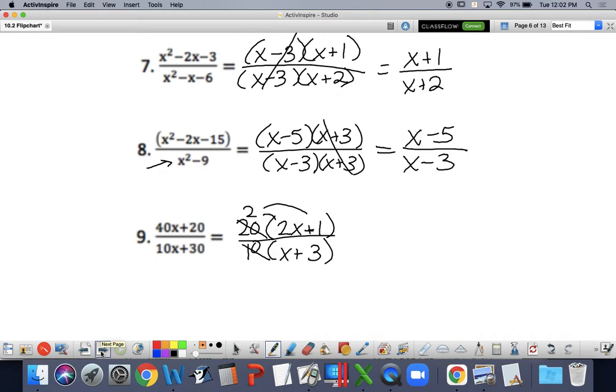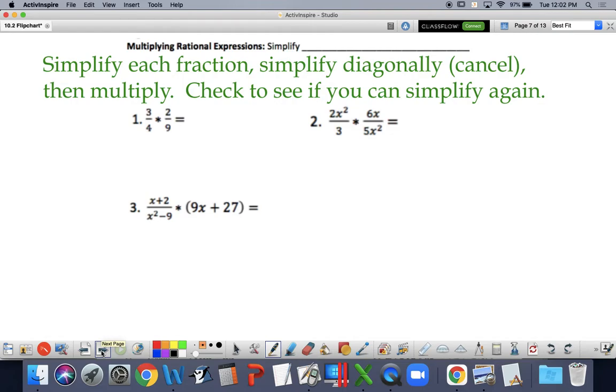Next up is multiplying. Now, who remembers how to multiply fractions? You multiply across on both sides, numerator and denominator. 3 times 2, 4 times 9. You're just going to multiply your numerators, multiply your denominators. Here's my caveat: if you do that, you might have a ton of simplifying to do later. So, I recommend you simplify each fraction first. Then simplify diagonally. And when I say simplify, I mean cancel. Then multiply. If you simplify everything ahead of time, you won't have as many errors that you may run into.